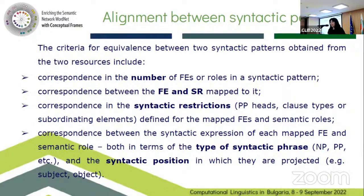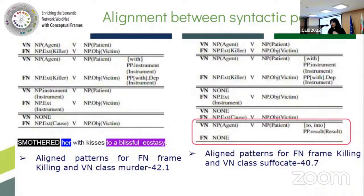When we approached the syntactic part — aligning syntactic patterns — we used several criteria: the correspondence in the number of FrameNet elements in frames, semantic crossing, the correspondence between FrameNet frames and semantic roles mapped to them, syntactic restrictions such as the head of a PP and closed types of bordering elements, and the type of syntactic phrase and syntactic positions — subject or object — in which they are expressed.